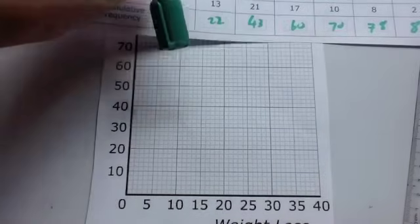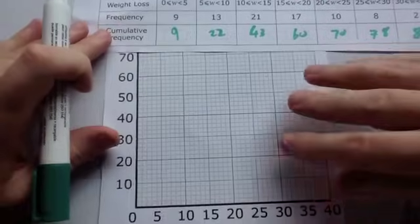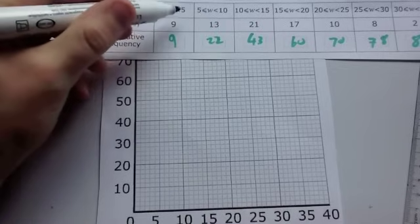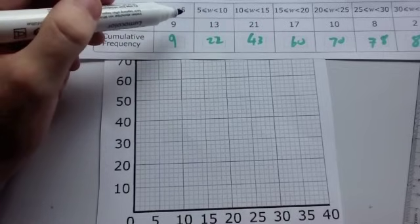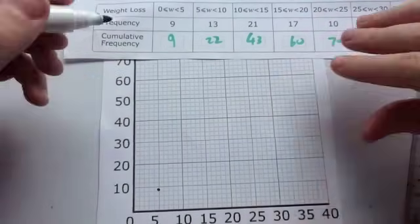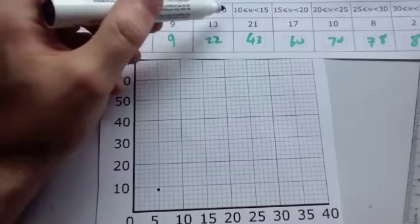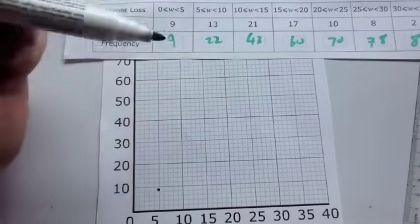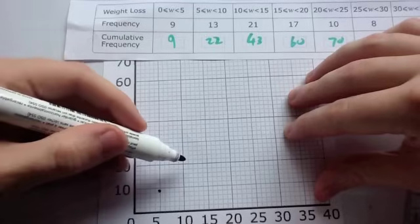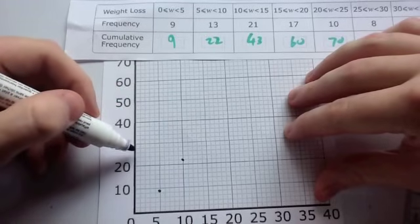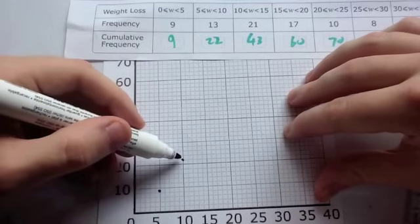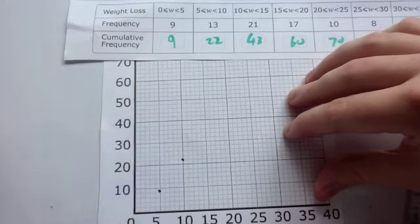Now we're going to plot our points on our cumulative frequency graph. So let's have a look at plotting the first point. Now remember I said it was 9 up until the end of this category. So what we're going to do is we're going to go 5 across and plot the point 9. We're going to go 10 across because it's 22 up until the end of this category. So we're going to go 10 across and go 22 up. Make sure you realize what each of these lines represent. Notice I put the 22 here because there were 5 lines that represent a difference of 10. So each of the little lines is 2.